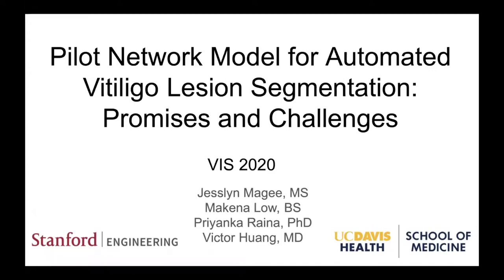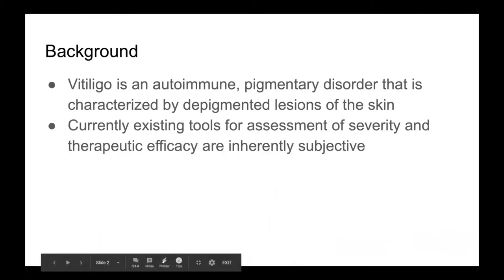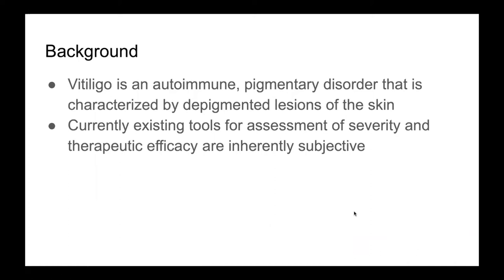We are presenting our current study: pilot network model for automated vitiligo lesion segmentation — promises and challenges. Vitiligo is an autoimmune pigmentary disorder characterized by depigmented lesions of the skin. Despite the presence of several quantitative methods for vitiligo body surface area estimation, three of which we will discuss shortly, there is no objective and standardized method to reliably evaluate vitiligo body surface area and comparative therapeutic response.